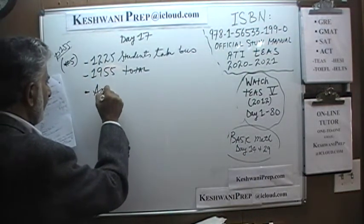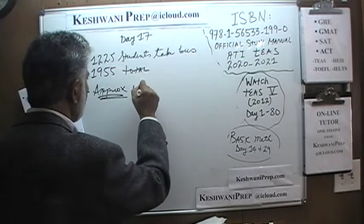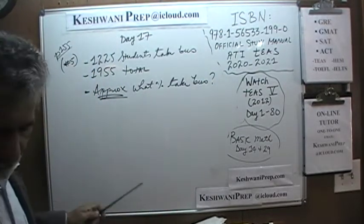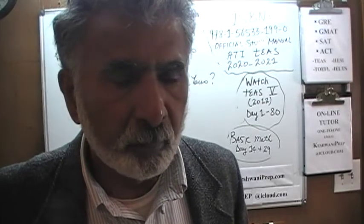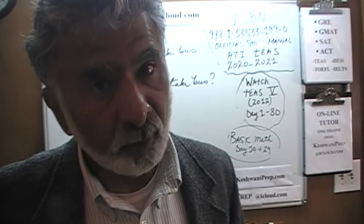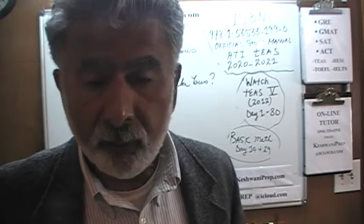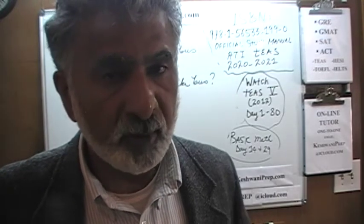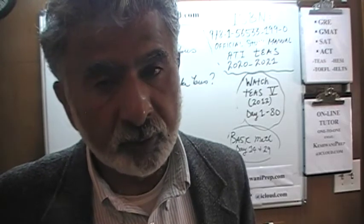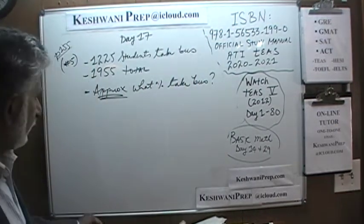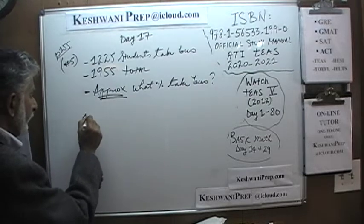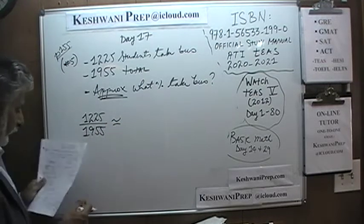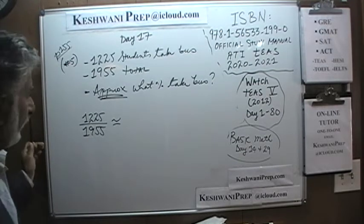It says approximately — that's an important word — approximately what percentage take the bus? If you look in the back of the book, even though the problem says they're looking for an approximate answer, they do the precise calculation, which is a silly thing to do. When they use the word 'approximately,' the answers are not close together, so approximation is exactly what we're told to do. We're not going to do the precise calculation. We'll pretend the top is 1200 instead of 1225.